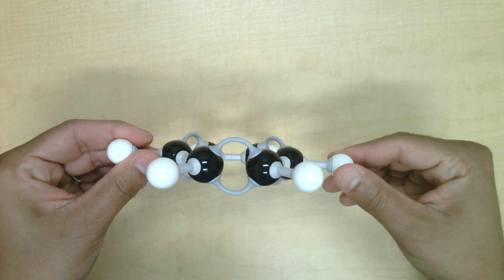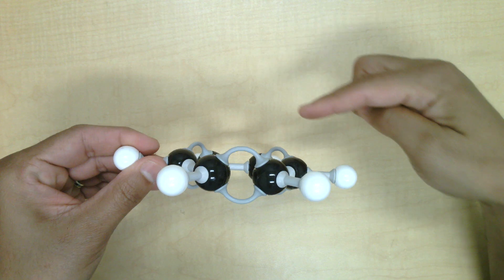Again, you can think of the pi electrons around the top of the trigonal planar ring.